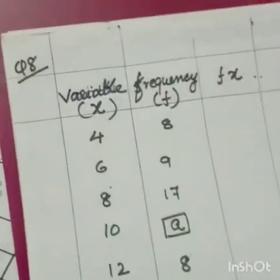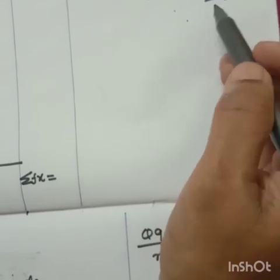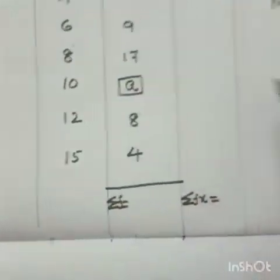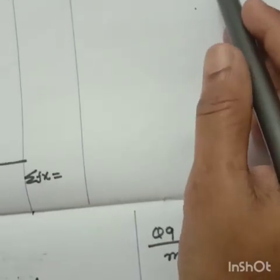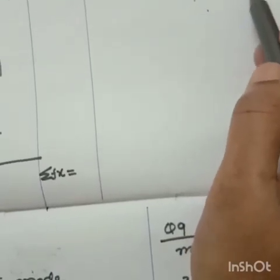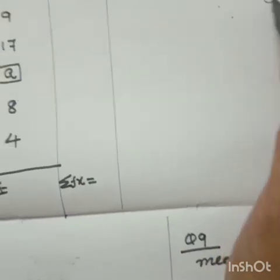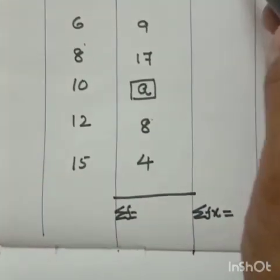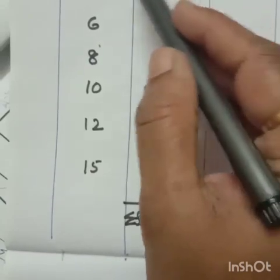Now question number 8. x̄ equal to sigma fx divided by sigma f. Sigma fx meaning sigma meaning summation add. fx fully you have to add, sigma f that mean you have to add the full frequency. fx meaning f into x. Multiply f into x.